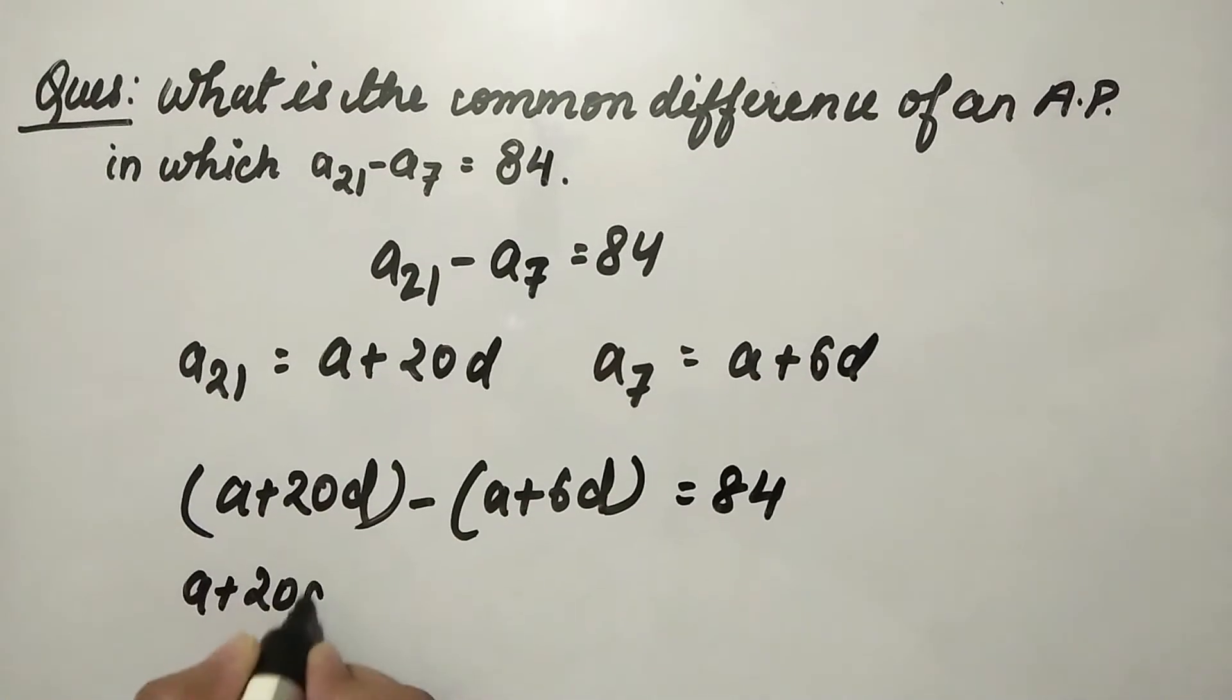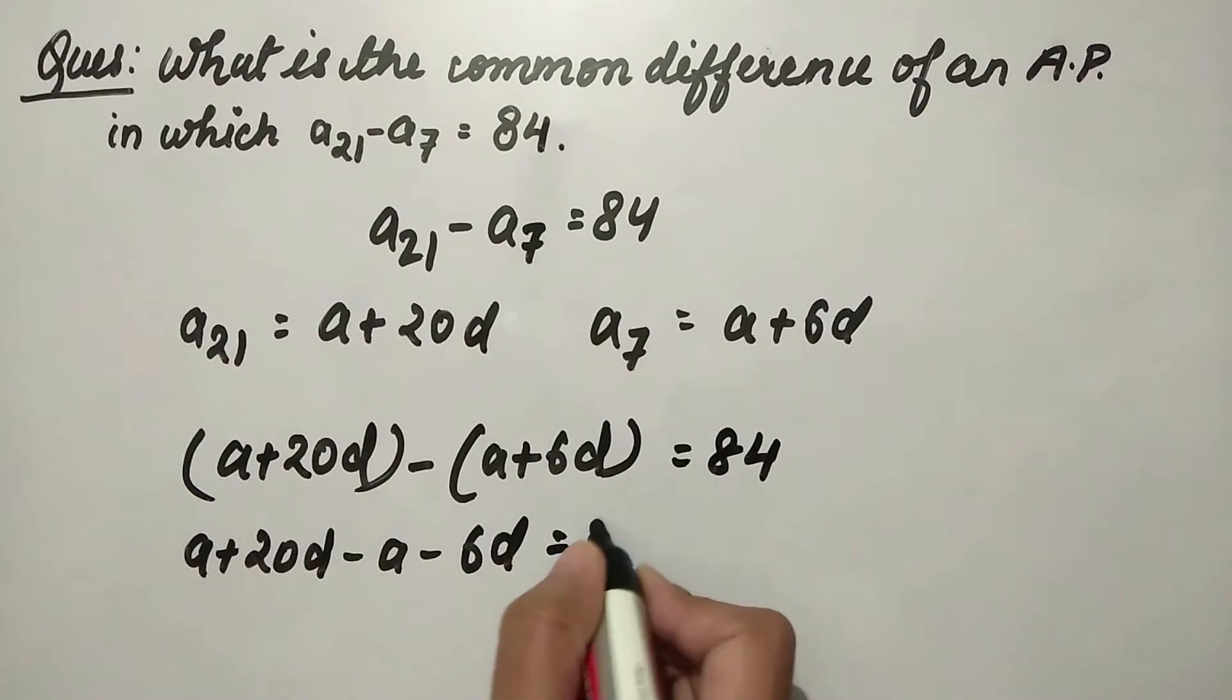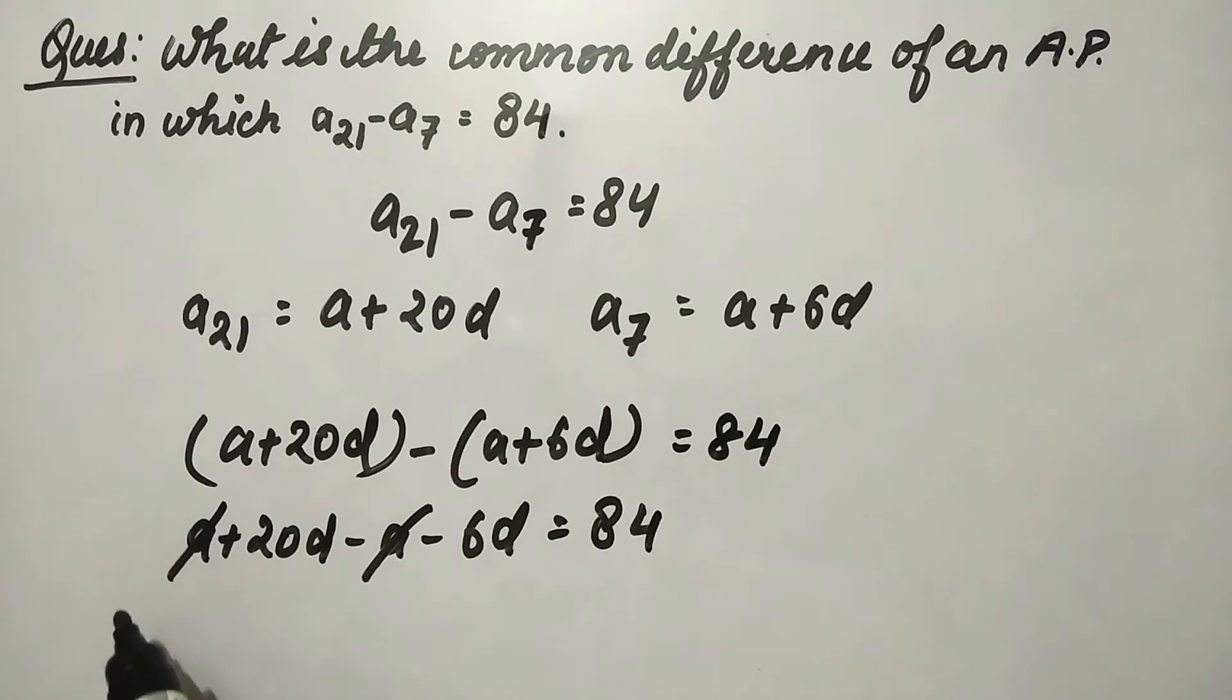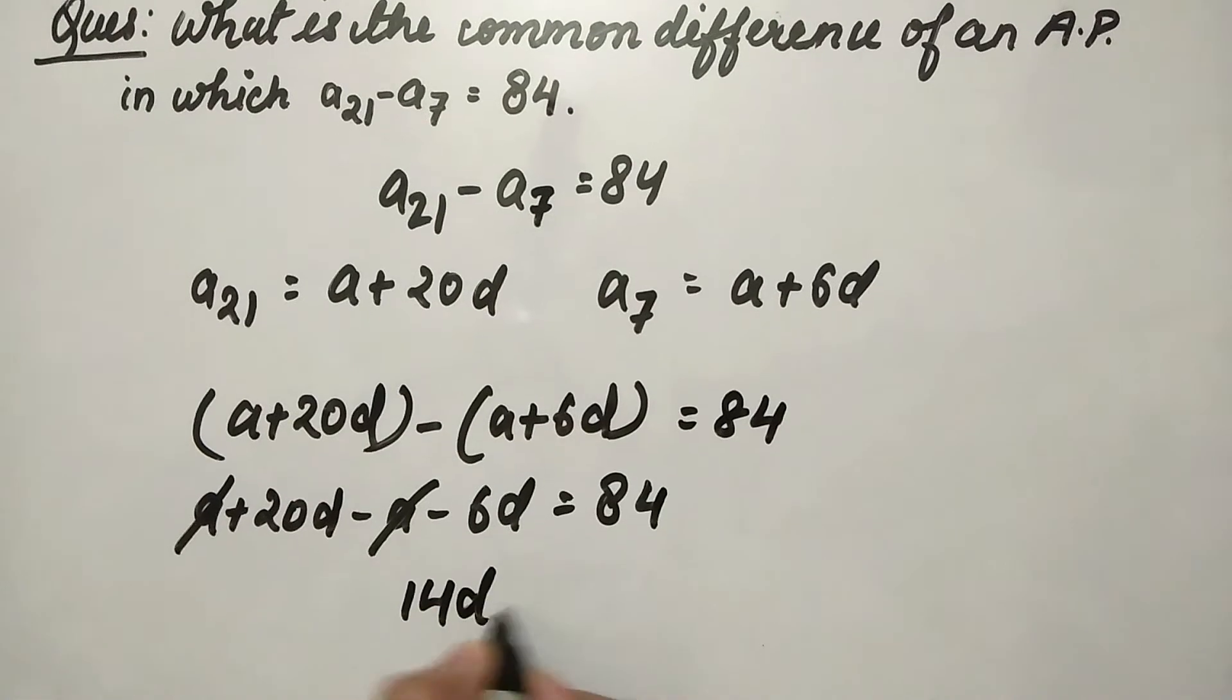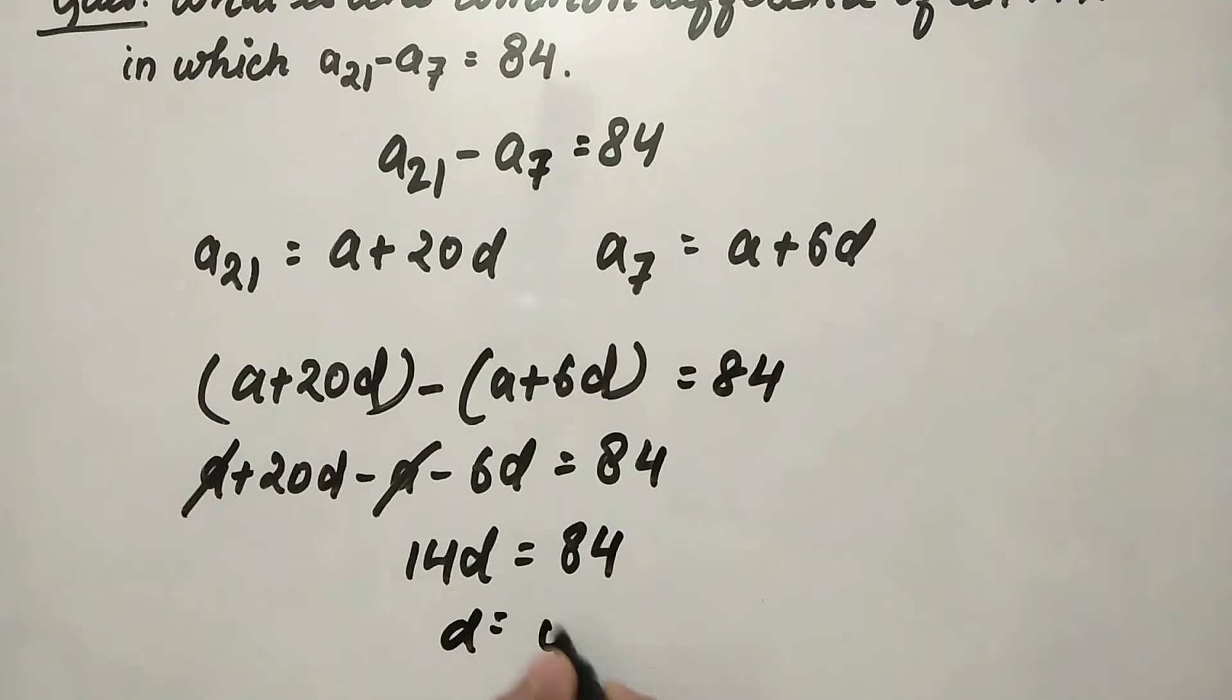a plus 20d minus a minus 6d equals 84. The a terms cancel out, leaving 20d minus 6d equals 84. So 14d equals 84.